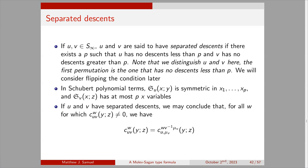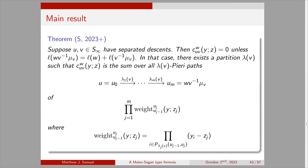If u and v have separated descents, we have this equality of coefficients: for all w such that C_{u,v,w}(y,z) is not zero, C_{u,v,w}(y,z) equals C_{u, mu_v, w v^{-1} mu_v}(y,z). In the second coefficient, we're multiplying by a double Schubert polynomial corresponding to a dominant permutation, so we can apply the Pieri formula to compute this. This is the main theorem of the paper.